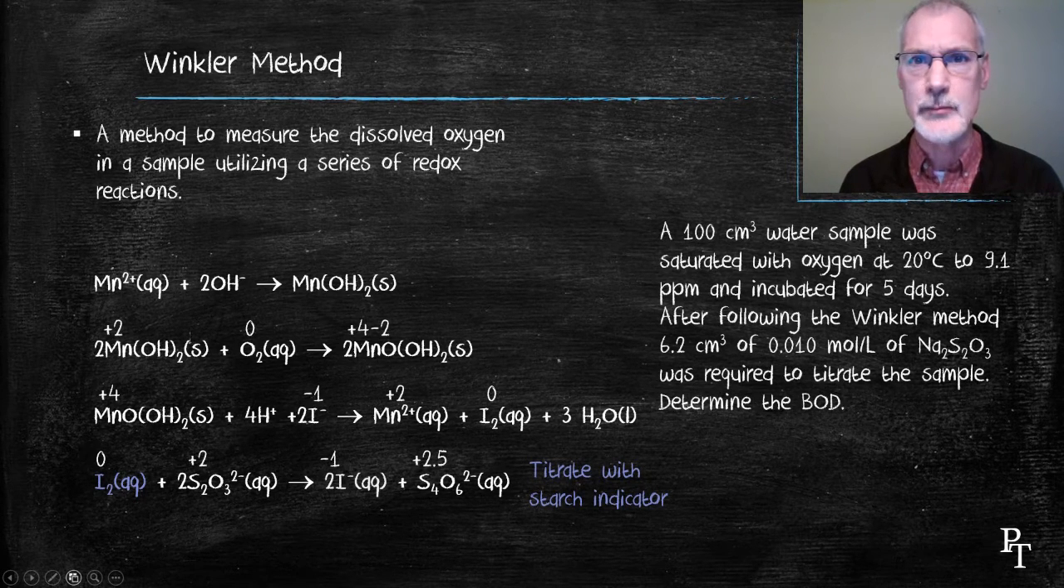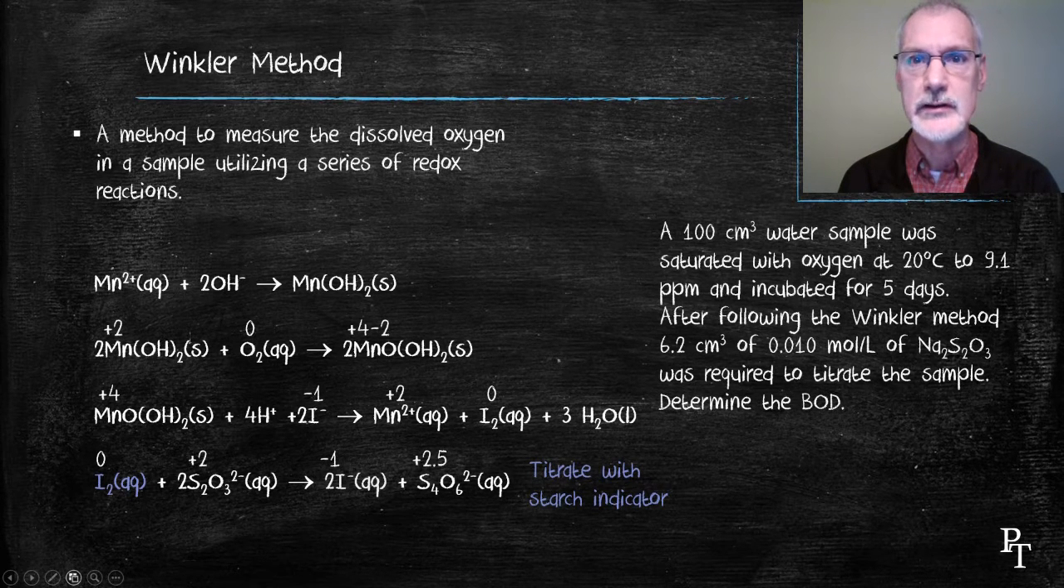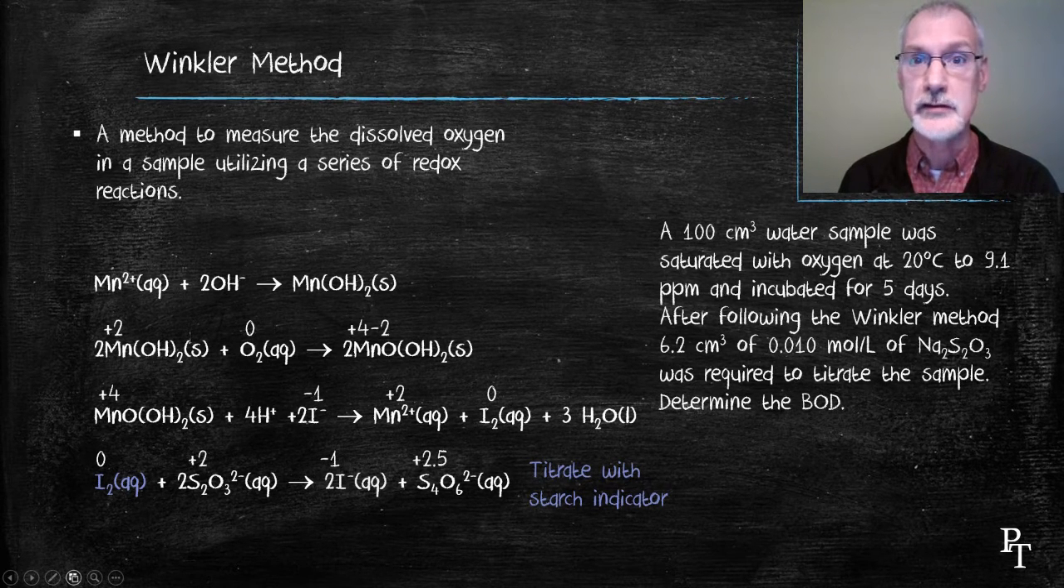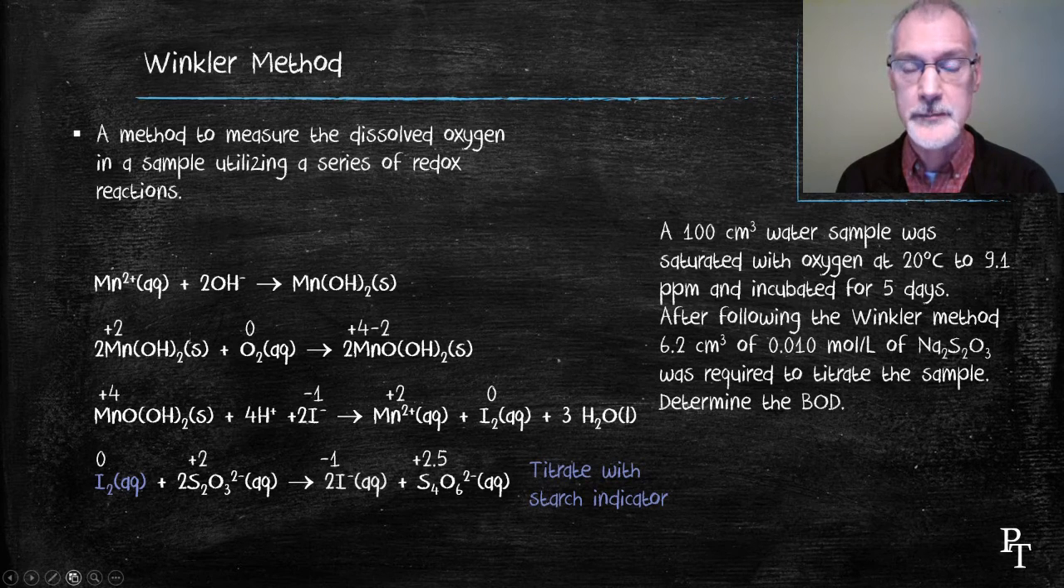Let's take a look at a worked example of how this would take place. Suppose you remove 100 cubic centimeters or 100 milliliters of water from a waste stream or a stream of water. The first thing we do is bubble air through it so we saturate it with oxygen at 9.1 parts per million if it was at 20 degrees Celsius.